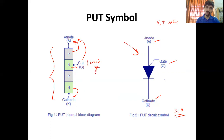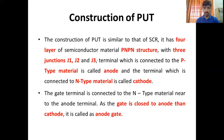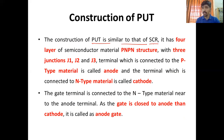जो gate है वो anode के करीब है, और इसको हम anode gate भी बोलते हैं। The construction of PUT is similar to that of SCR — SCR के जैसे ही construction है। It has four layers — PN PN structure.